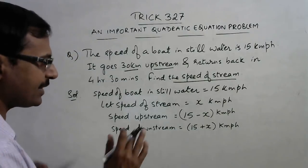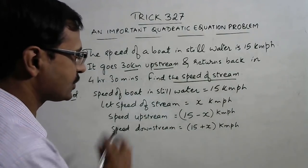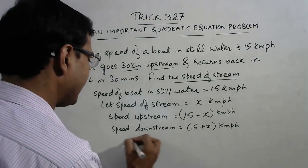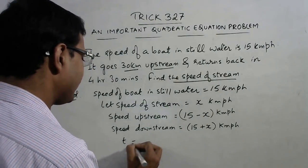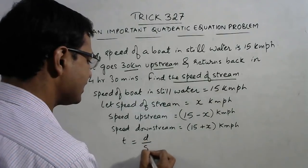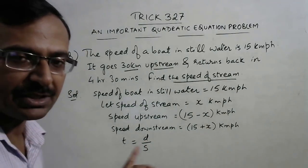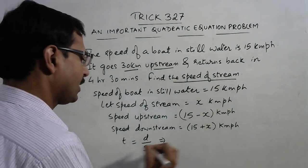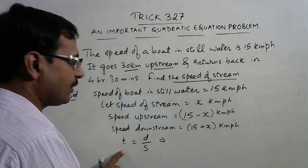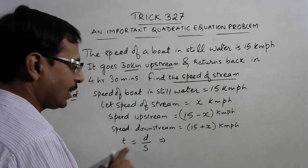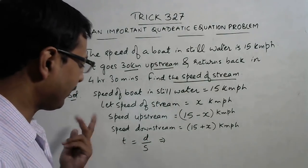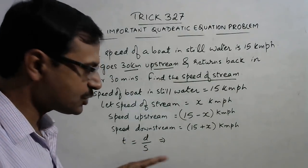Now whenever we use upstream downstream motion concept, we have to apply the formula of time, that is distance upon speed. This is the formula we need to apply in such questions. The time is to be found out or given in the question. Whatever, out of these three variables, two will be given.